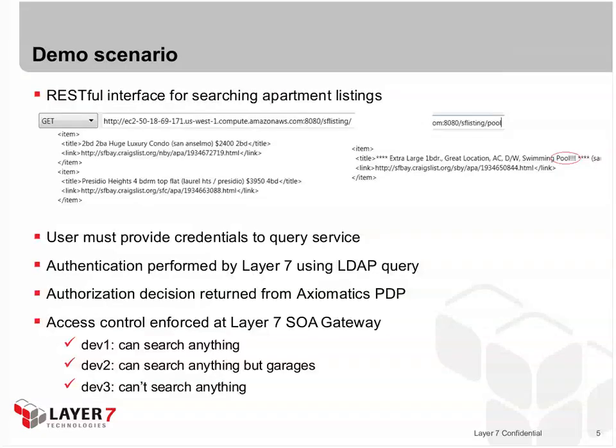Let's talk about our demo scenario. This demo is using a RESTful interface for searching apartment listings. If you provide a simple base URL, you get back all apartment listings. If you provide some search criteria on the end of the URL, you get back only those listings that match the search criteria. The user must provide credentials to query the service. Authentication is performed by Layer 7 using an LDAP query, and an authorization decision is returned from the Axiomatics PDP and enforced at the Layer 7 SOA gateway. The user dev1 can search anything, dev2 can search anything but for apartments with garages, and dev3 isn't allowed to search anything.